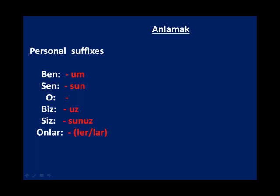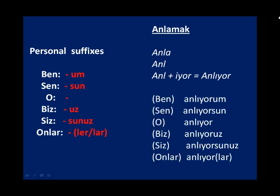Now a verb from the second group: anlamak (to understand). You omit the infinitive and get 'anla', but the problem is the root ends in a vowel, so we omit that vowel too — getting 'anl'. Now add '-ıyor' according to vowel harmony: anlıyor. Then add personal suffixes: ben anlıyorum, sen anlıyorsun, o anlıyor, biz anlıyoruz, siz anlıyorsunuz, onlar anlıyorlar. A Turkish person would say: ben anlıyorum, sen anlıyorsun (skip the R), o anlıyor, biz anlıyoruz, siz anlıyorsunuz, onlar anlıyorlar.